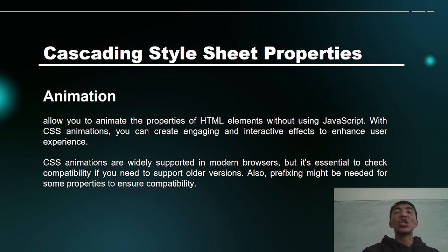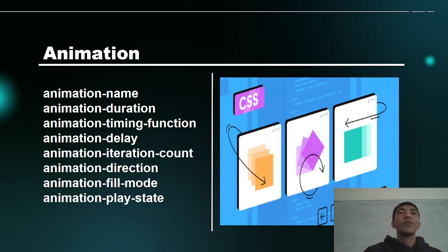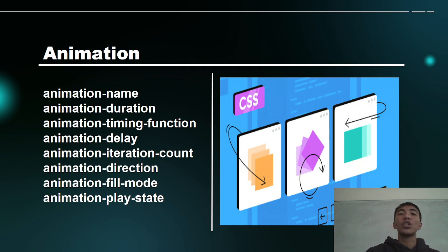We need to know what can be included when it comes to animations. It will not be easy when it comes to creating animations. Nowadays, with newer generations, we check how the website entertains our audience and gets their attention to open it, read it, and explore the content. The properties included in animations are: animation-name, animation-duration, animation-timing-function, animation-delay, animation-iteration-count, animation-direction, animation-fill-mode, and animation-play-state.